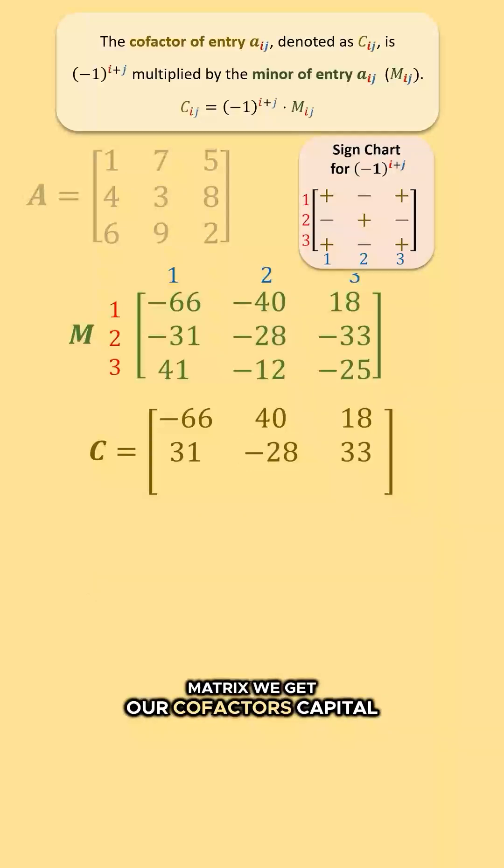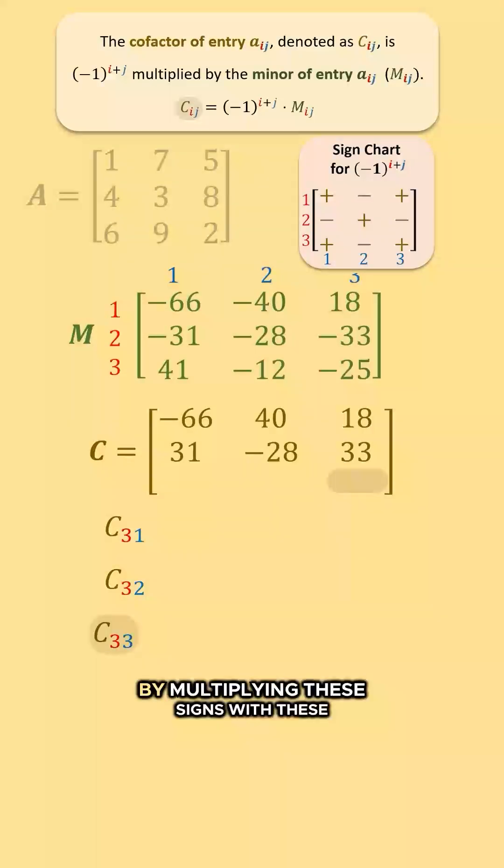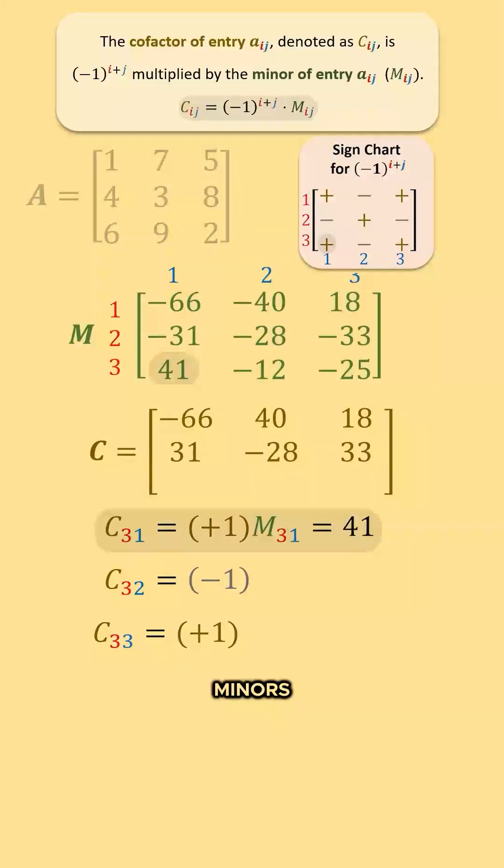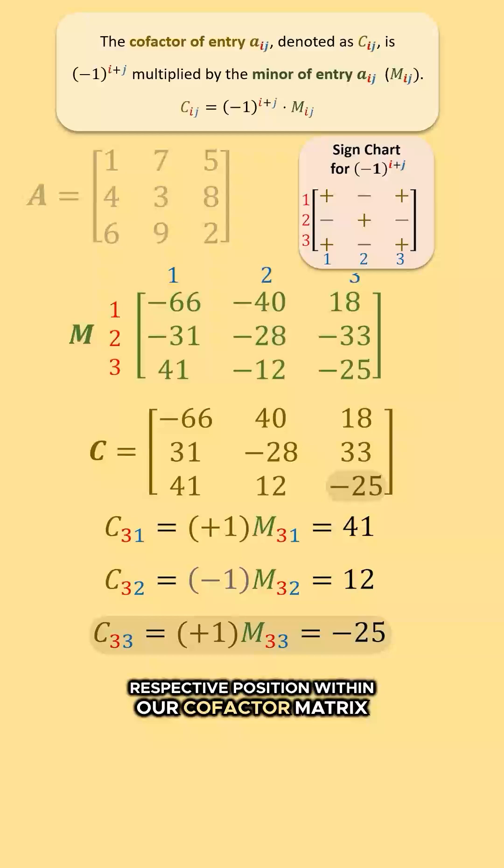We get our cofactors capital C sub 31, capital C sub 32, and capital C sub 33 by multiplying these signs with these minors. We insert their values into their respective position within our cofactor matrix.